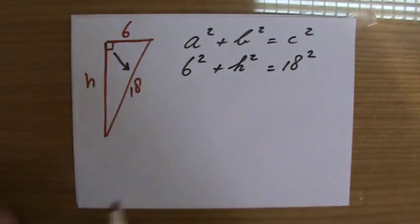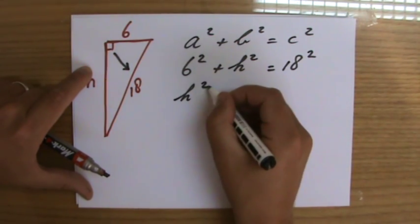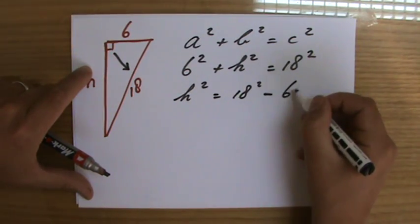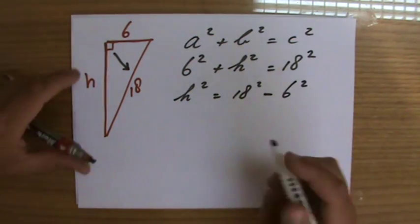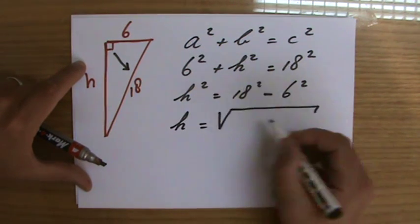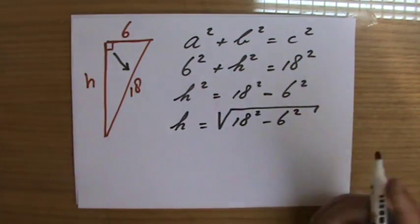I can work it out, so h² = 18² - 6². I'm rearranging the formula, so the height is the square root of 18² - 6².